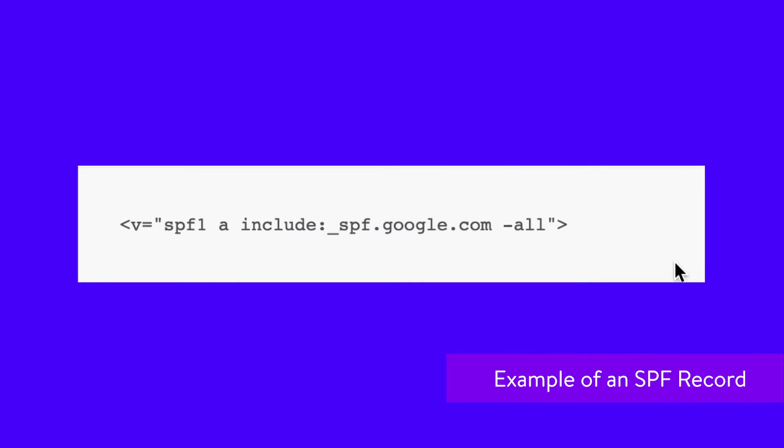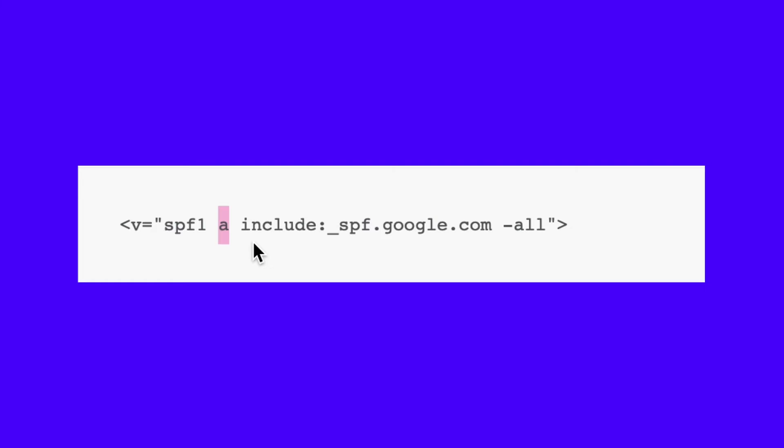Here's what an SPF record looks like and what each portion of it means. v=spf1 is the SPF version 1, a component that identifies a text record as an SPF record. 'A' authorizes the host detected in the A record of the domain to send emails. 'Include' is used to authorize emails that the sender can send on behalf of a domain. 'All' tells the receiver's server that addresses not listed in this SPF record are unauthorized to send any email, and it also tells servers to reject such addresses.